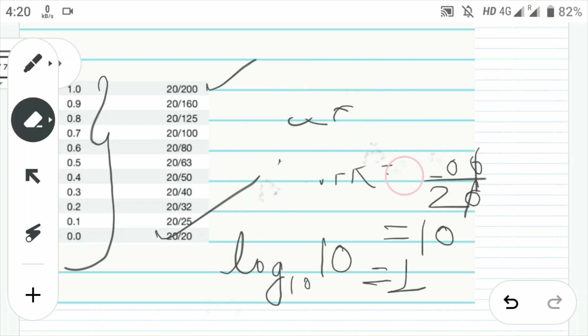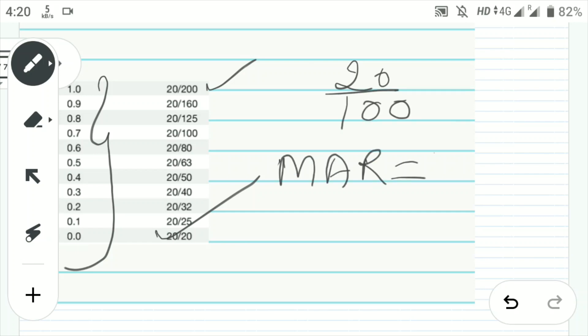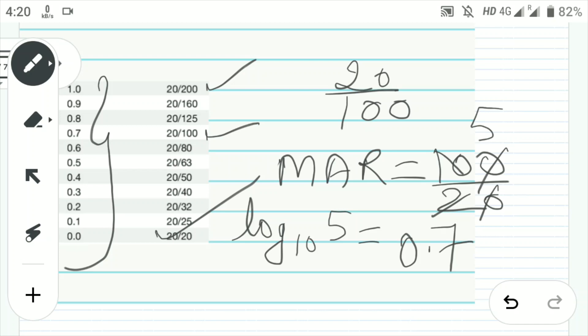Now let's take another example, 20 by 100. So minimum angle resolution will be 100 by 20, that is 5. Now you have to calculate log of 5. You know log base 10 of 5 is 0.70. We have got the correct answer. Similarly, 20 by 20, the log value will be log of 1, which is always zero.